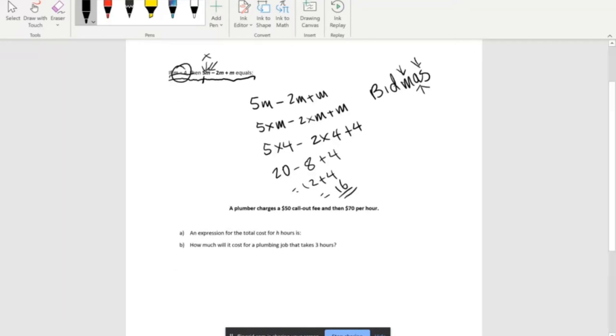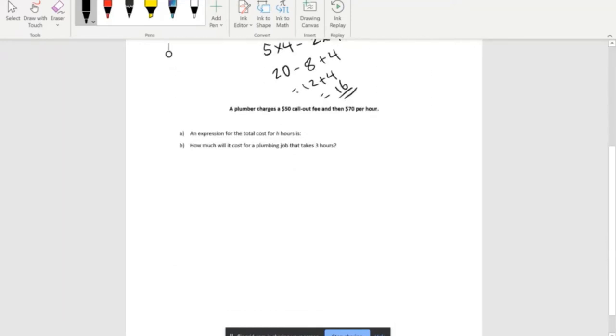Now for the second question. A plumber charges a $50 call out fee and then charges another $70 per hour. Part A is: write an expression for the total cost for H hours.